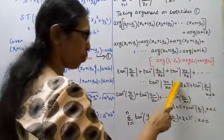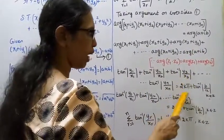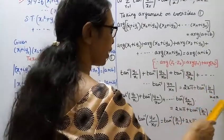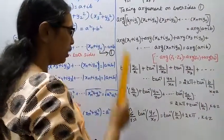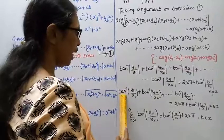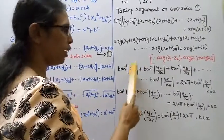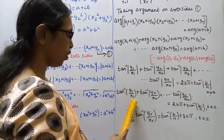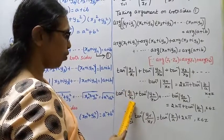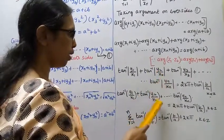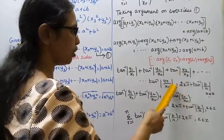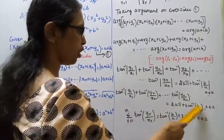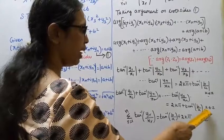Adding 2kπ: tan⁻¹(y1/x1) + tan⁻¹(y2/x2) + ... + tan⁻¹(yn/xn) = 2kπ + tan⁻¹(b/a), where k belongs to ℤ. That is Σ tan⁻¹(yr/xr) = tan⁻¹(b/a) + 2kπ. Subdivision proved.